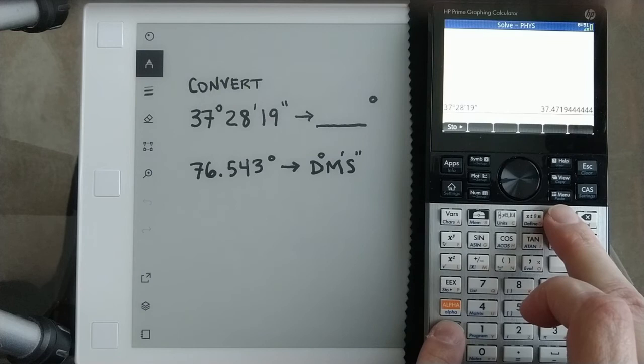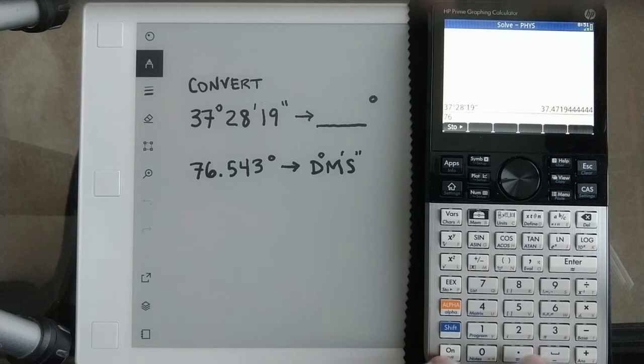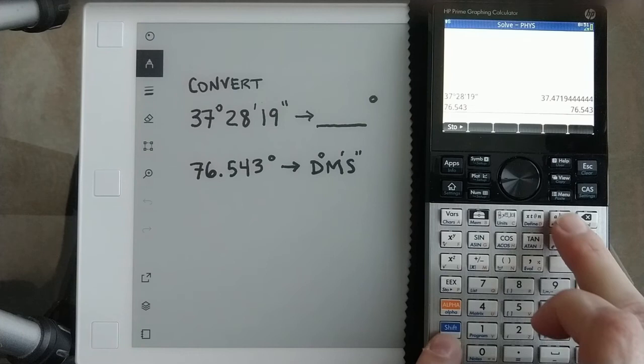So 37.472 degrees. And then to go the other way, 76.543, just type it in like that and then use that same shift and then that conversion, and it does it right away: 76 degrees, 32 minutes, and 34.8 seconds.